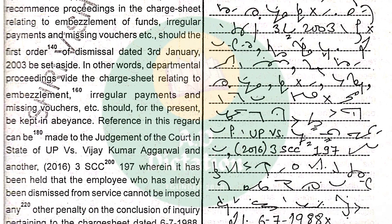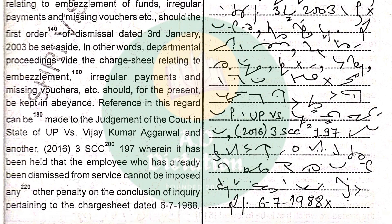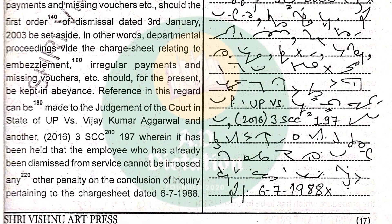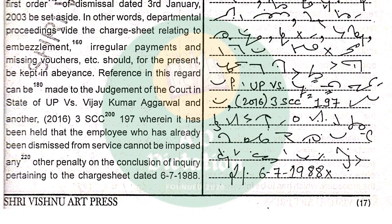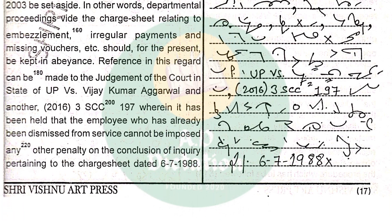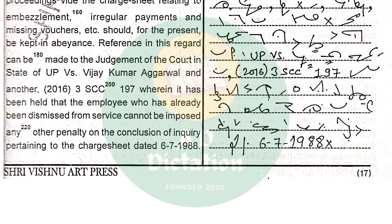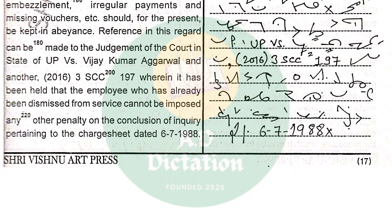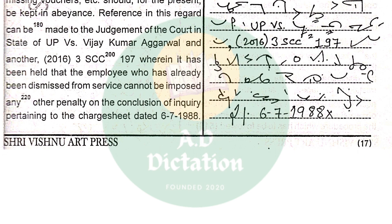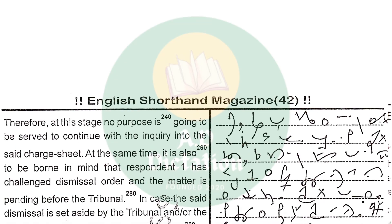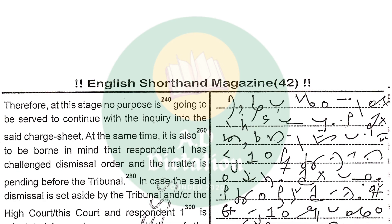Reference in this regard can be made to the judgment of the court in State of U.P. vs. Vijay Kumaragarwal and another, reported in 2016-3 SCC 197, wherein it has been held that the employee who has already been dismissed from service cannot be imposed any other penalty on the conclusion of inquiry pertaining to the chart sheet dated 6-7-1988. Therefore, at this stage, no purpose is going to be served to continue with the inquiry into the said chart sheet.